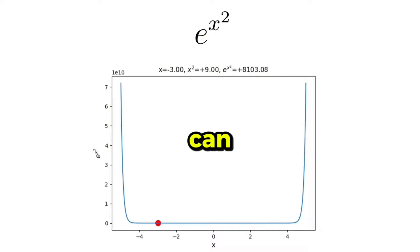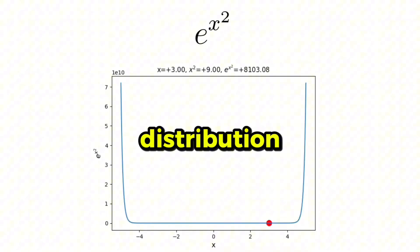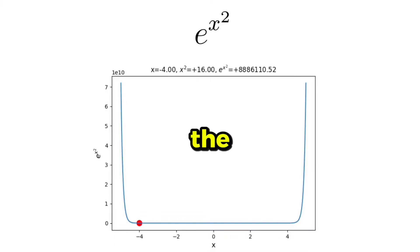Another thing that we can do that brings us closer to the definition of the normal distribution is to compute the square of the input value. This operation attains two things: one, it makes the function symmetric with respect to the y-axis, and two, the output of the function is exploding even faster.